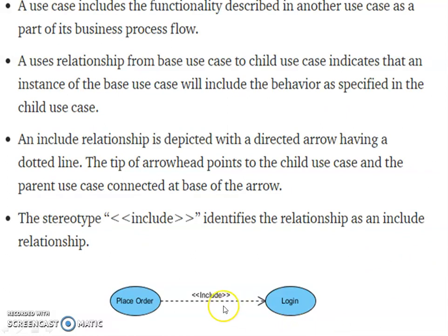And this is also include relationship. Here the reverse. This one is the child and this one is the login is the parent. Use case includes the functionality describing in another use case as a part of his business process flow. A uses relationship from base use case to child use case indicates that an instance of the base use case will include the behavior as specified in the child use case. The stereotype include interface the relationship as an include relationship.